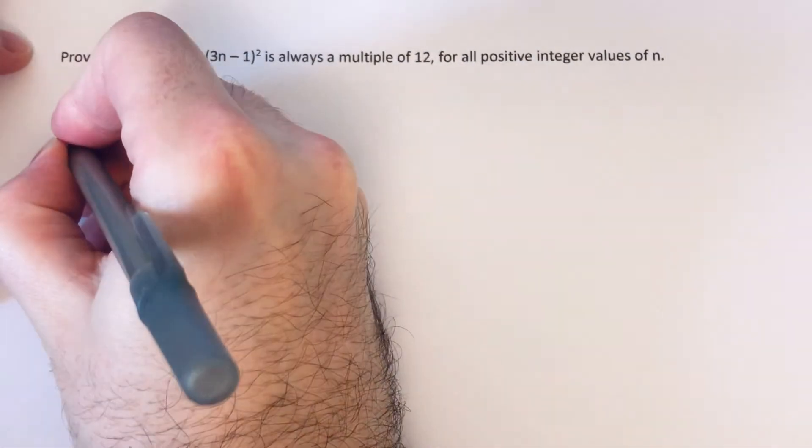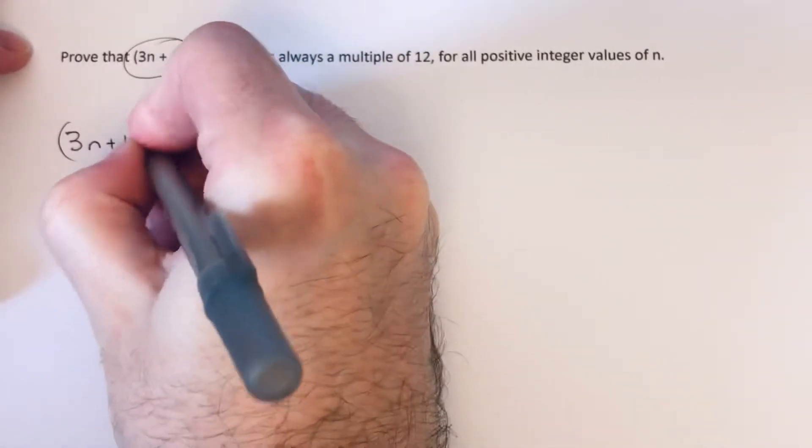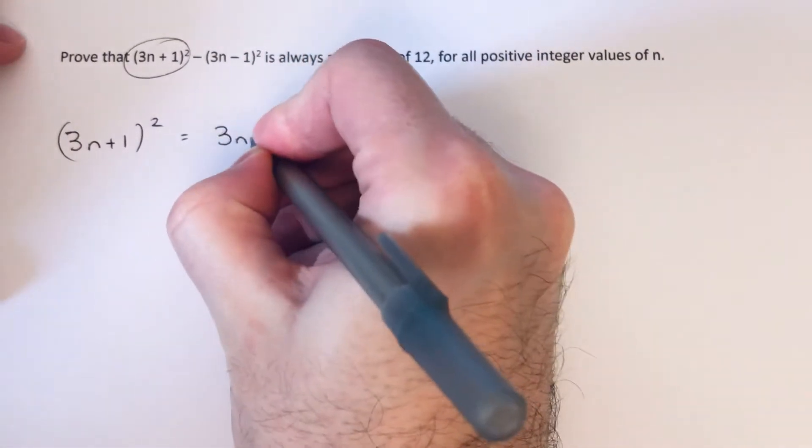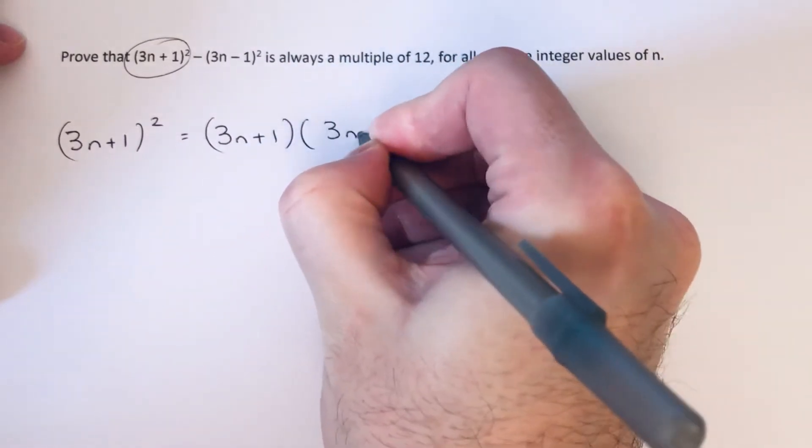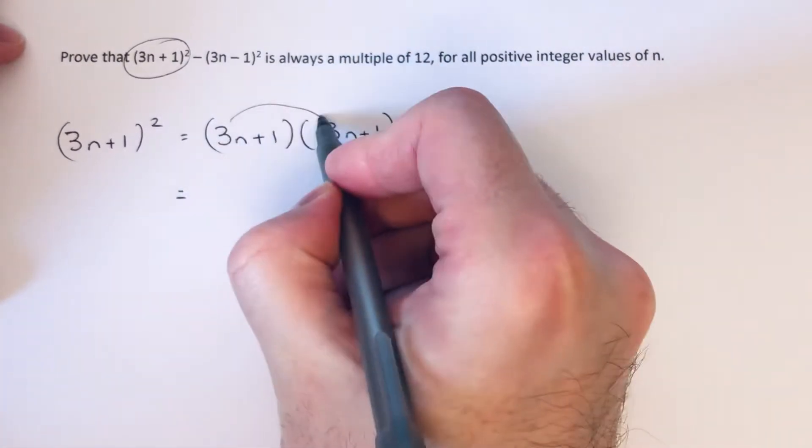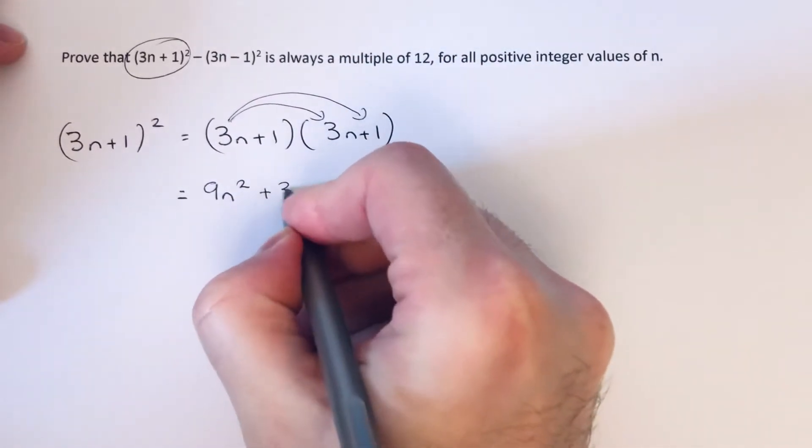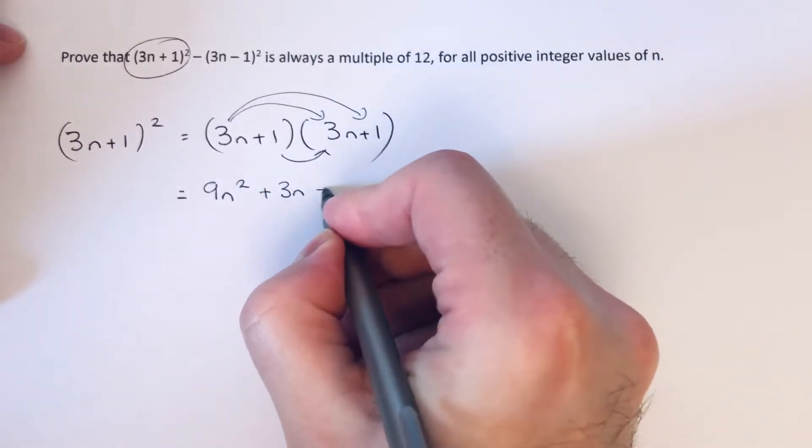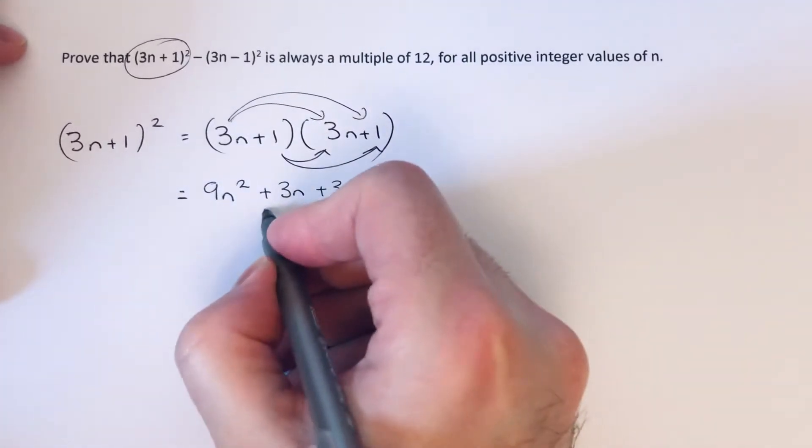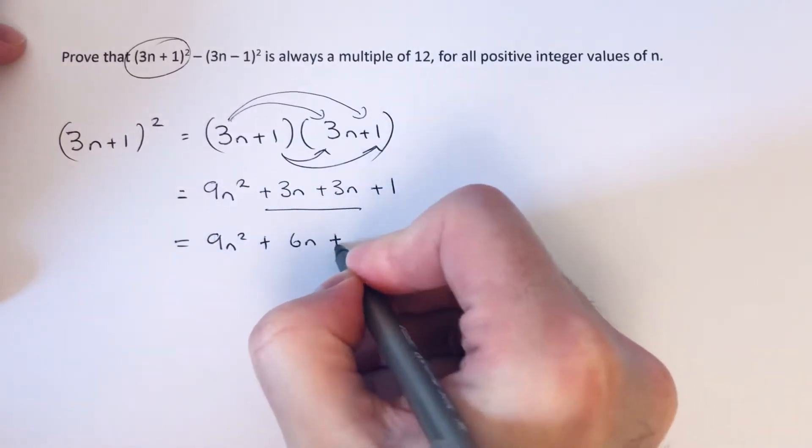The first thing we need to do is multiply out these double brackets. I'm going to write the first double bracket as 3n plus 1 multiplied by 3n plus 1. If we expand this double bracket, 3n times 3n is 9n squared, 3n times 1 is 3n, 1 times 3n is 3n, and 1 times 1 is 1. If we simplify the middle terms, we get 9n squared plus 6n plus 1.